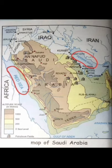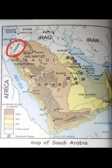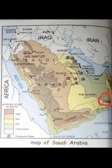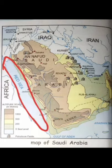The Tropic of Cancer passes through Saudi Arabia. The countries that surround it are Jordan, Iraq, and Kuwait in the north; then Qatar, the United Arab Emirates (UAE), and Bahrain in the east; Oman and Yemen in the south; and the Red Sea lies to the west.